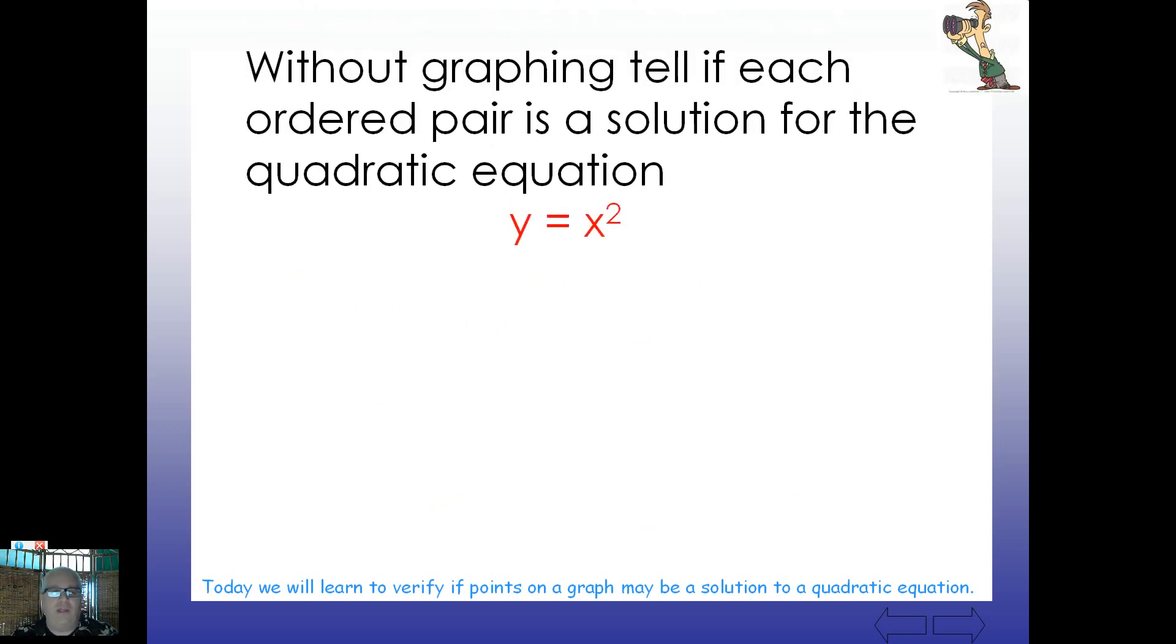So without graphing, tell if each ordered pair is a solution for the quadratic equation. So here's just an example for you to look at. So just notice the guy up here just to watch please. You've got two and four. Remember that this is x and this is y. So I'm going to plug two in for x and four in for y. Let's do that and see what happens. Is it true that two squared equals four?